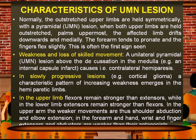Normally, outstretched upper limbs are held symmetrically. With pyramidal lesions, both upper limbs are held outstretched with palms uppermost, and the affected limb drifts downwards and medially. The forearm tends to pronate and the fingers flex slightly. This is often the first sign of weakness and loss of skilled movement.